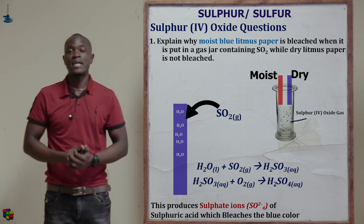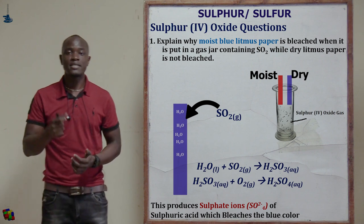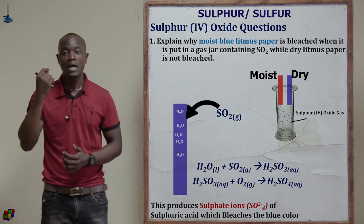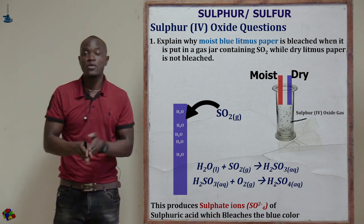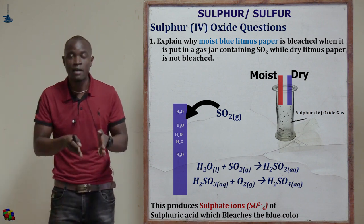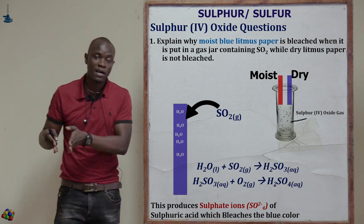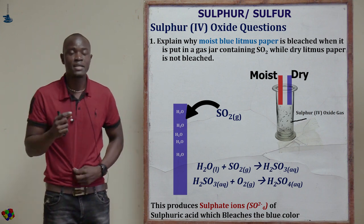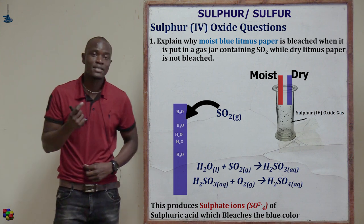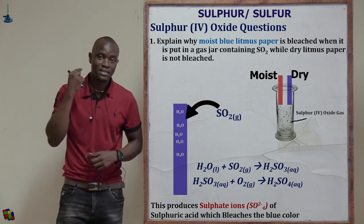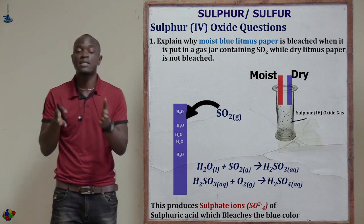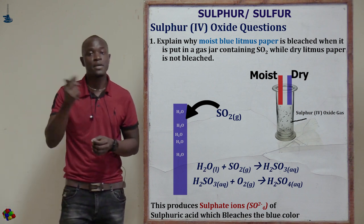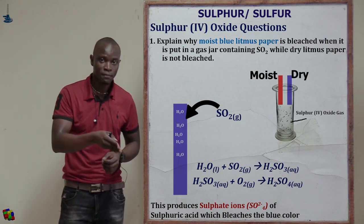Remember the definition of an acid: any substance which contains replaceable hydrogen ions. If you dissociate sulfuric acid, we are going to have hydrogen ions and sulfate ions. These hydrogen ions in sulfuric acid represent that sulfuric acid is acidic, and blue litmus paper in the presence of an acid will change color to red.